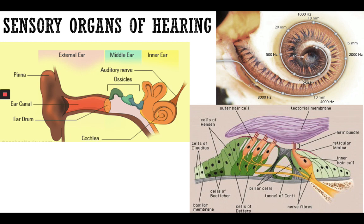The cochlea has little hair cells that catch the sound vibrations. The ossicles increase the vibration by about 20 times, and after this amplification the sound vibrations travel through the fluid-filled cochlea with its hair cells, and are then sent to the central nervous system as electrical signals.